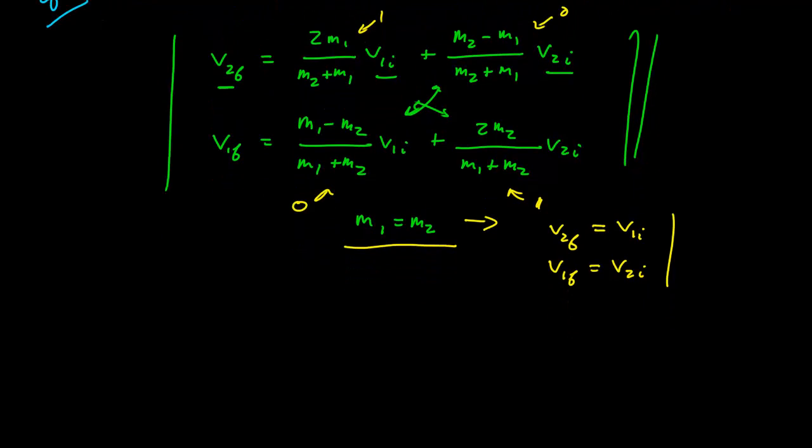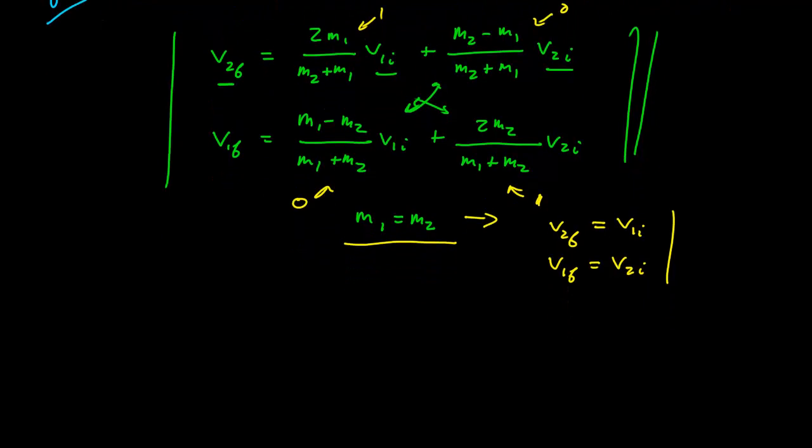All right, so let's do a quick example for elastic collisions. We're going to use the same example I did for the totally inelastic before. I have some mass of 4 kilograms going at 6 meters per second, and I have a mass of 5 kilograms going at 8 meters per second, and they're going towards each other.